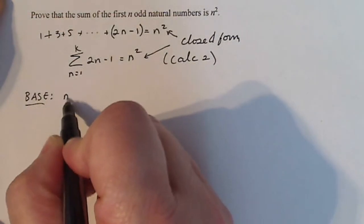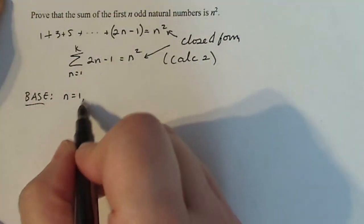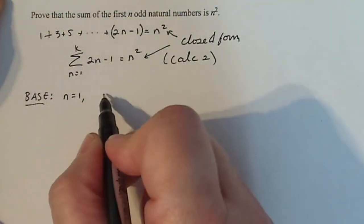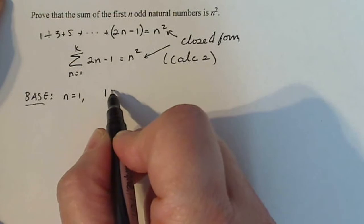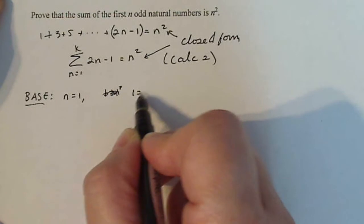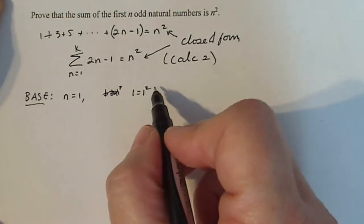So I do base case n = 1. The only one you truly have to show is this one for the smallest natural number. So I know that if I add 1 to itself, that gives me 1 squared. 1 is equal to 1 squared. So that one works out.